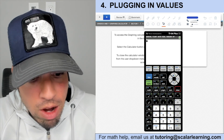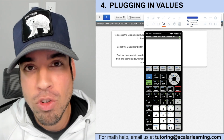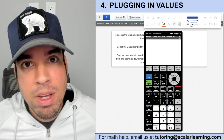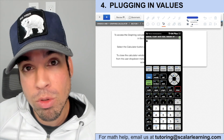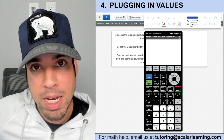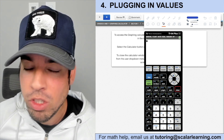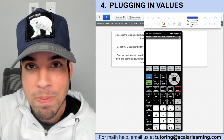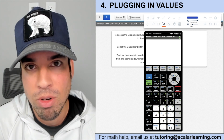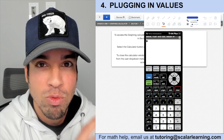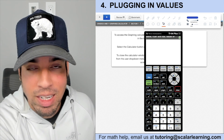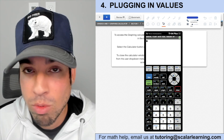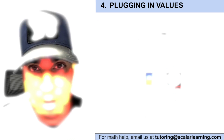The next tip is using your calculator to check values. A common question asks you to find an equivalent expression. Choose a value for x — I recommend x = 2 or x = 3, not 0 or 1. Plug it into the given expression using your calculator to get a result. Then plug the same x into each answer choice until you get the exact same value — that's your answer. Let the calculator do the legwork.